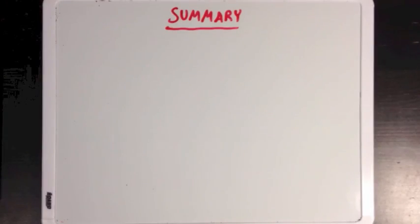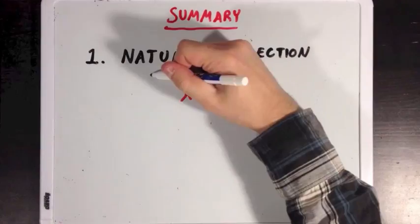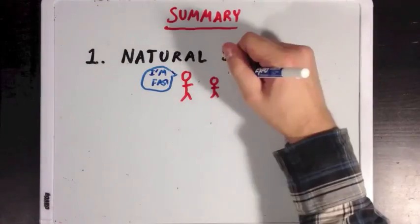So what did we learn? Well, first we learned about the concept of natural selection and how traits that help an organism survive are more likely to get passed on to offspring.